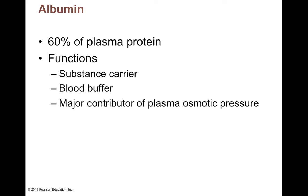If you don't make enough albumin because your liver is failing, what happens to your blood? You'd have water loss — water moving from blood into the tissues. You know what that looks like: edema, which is swelling. If you don't have enough albumin, you get pretty significant edema, which could occur in the distal extremities and even the abdominal cavity.